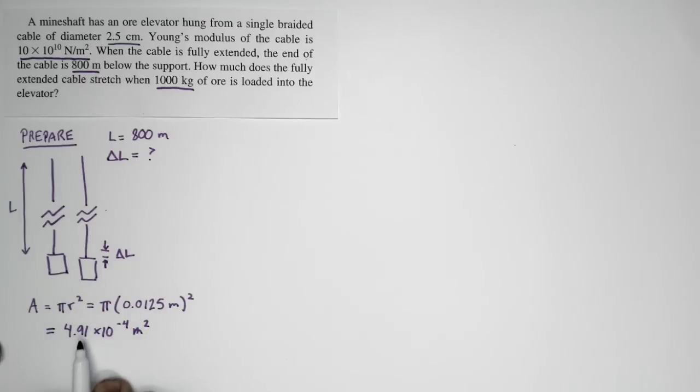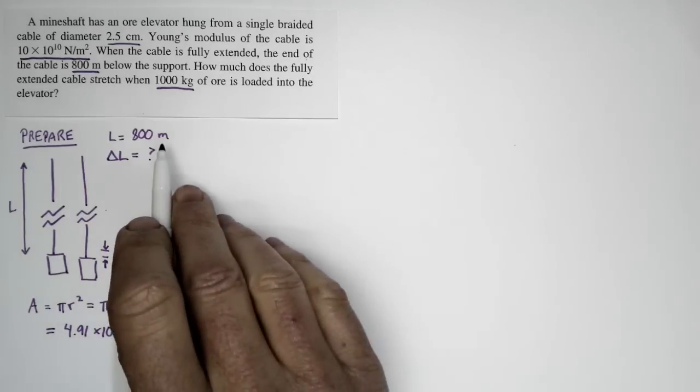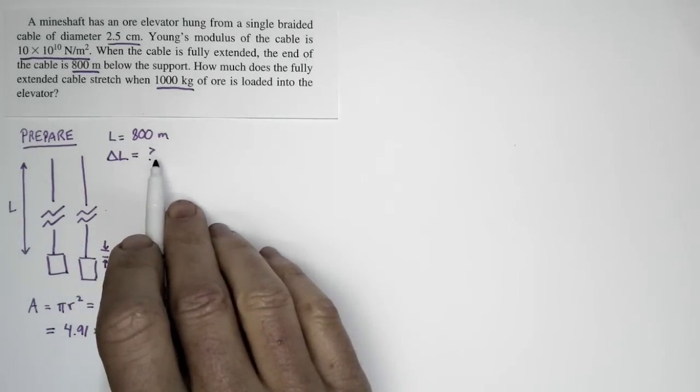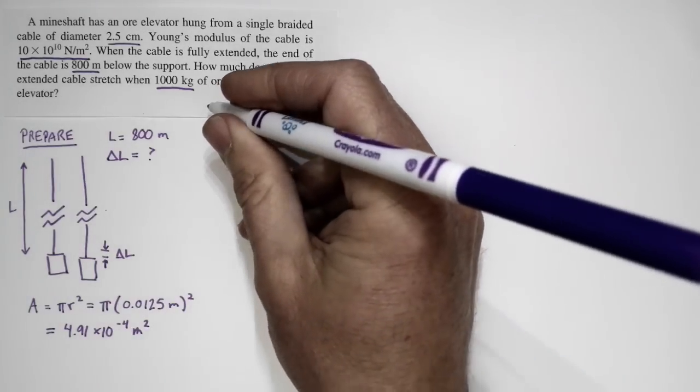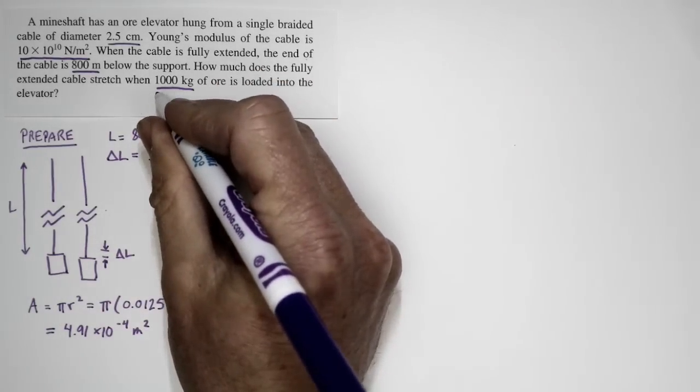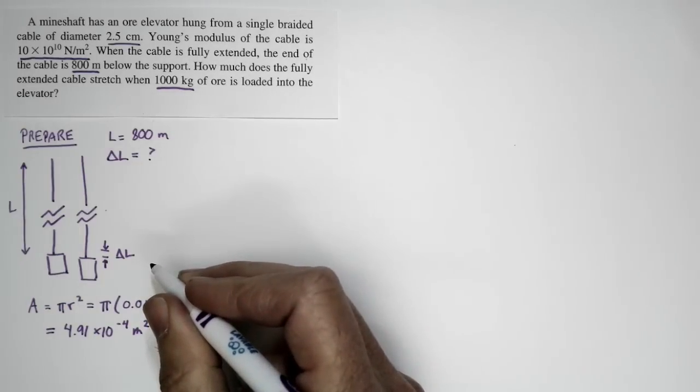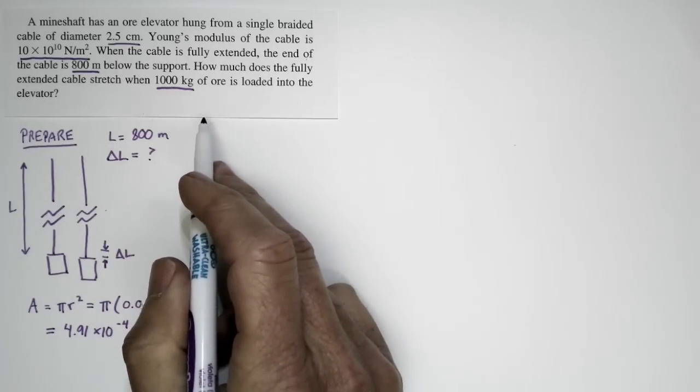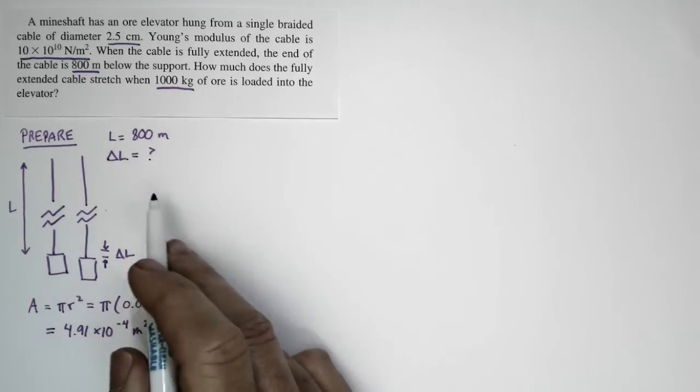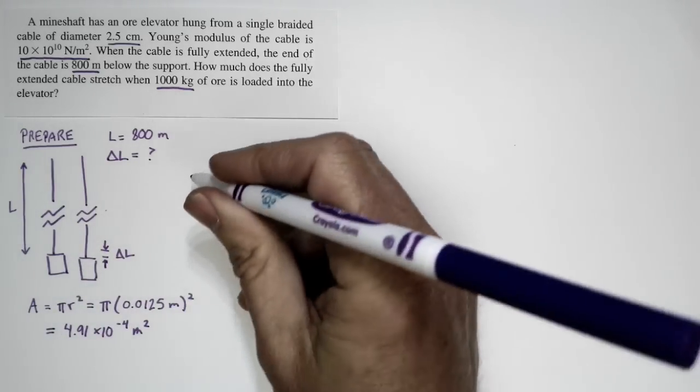We have the length of the cable, we're looking for how much it stretches, and we know the cross-section area of the cable. The cable stretches because there's an additional 1,000 kilograms of ore that's loaded into the elevator. We don't really worry about how much the elevator weighs or how much the cable weighs—we want to know the additional stretch with this additional force.